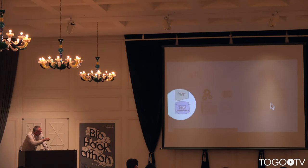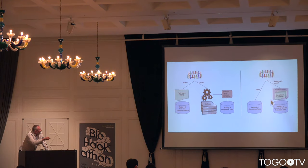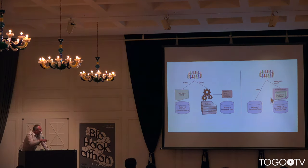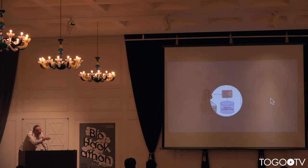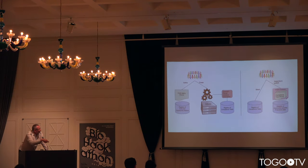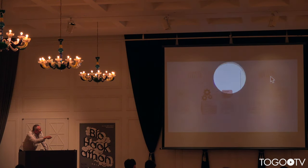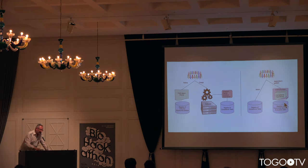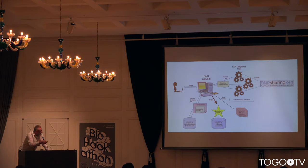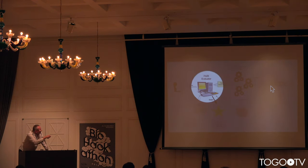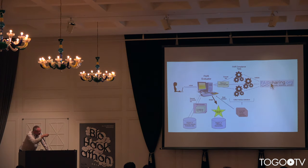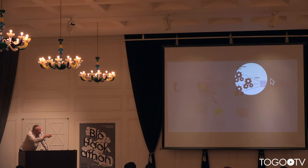The plan is this: we're going to have a registry of metrics created by communities, and every metric will come with a testing tool — a web-service-based evaluation tool which will follow the SmartAPI interface definitions. Individual communities can pick whichever metrics they wish and compile them into an assessment portfolio — effectively saying 'these are the metrics that are important to us.' Any user can then come along, go to the evaluation system, and select the metrics they like, then provide the resource to be evaluated.